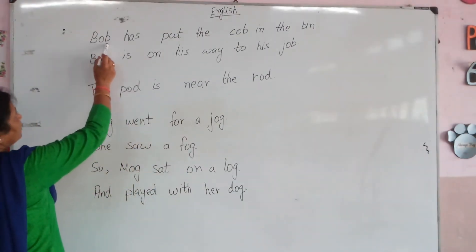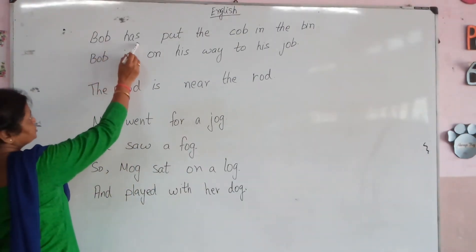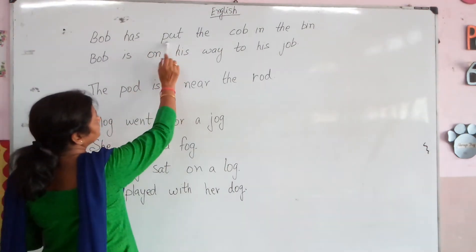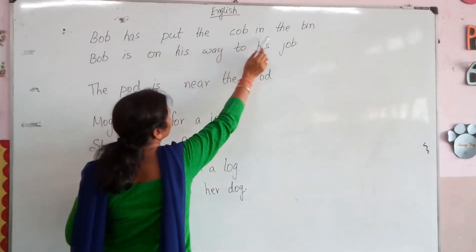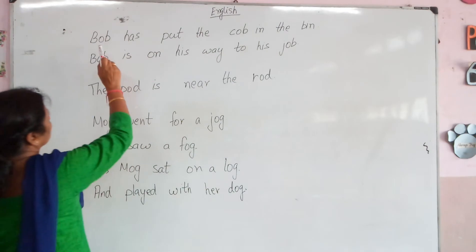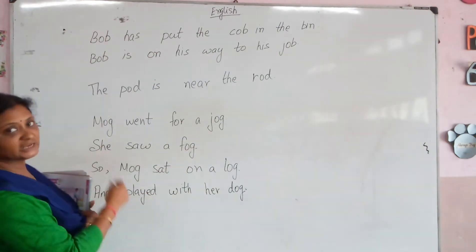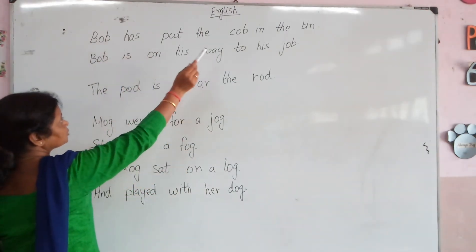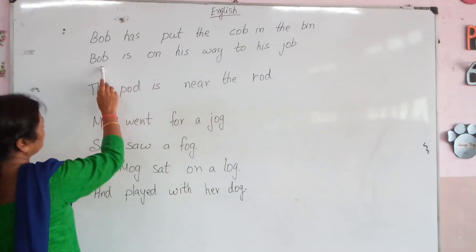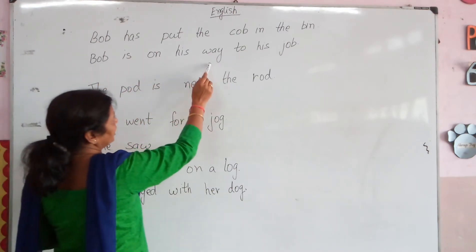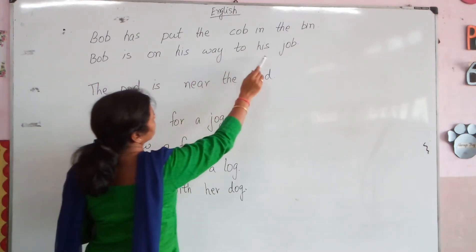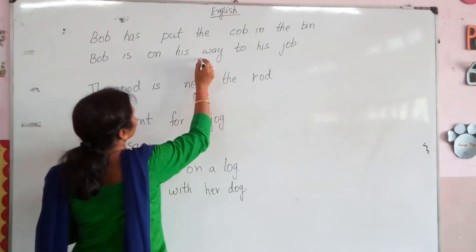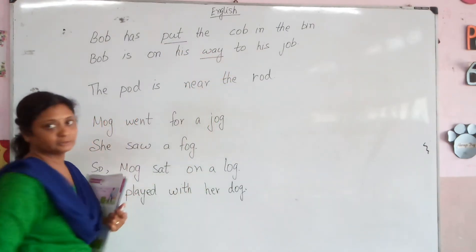Bob has put the cob in the bin. All the rest of the words are here. Bob has put the cob in the bin. Bob is on his way to his job. So this is your due word: 'wait' and 'put'.